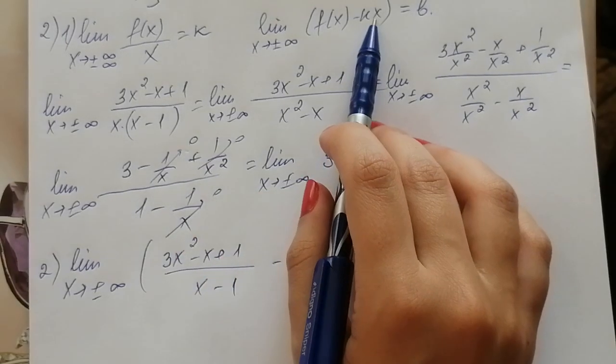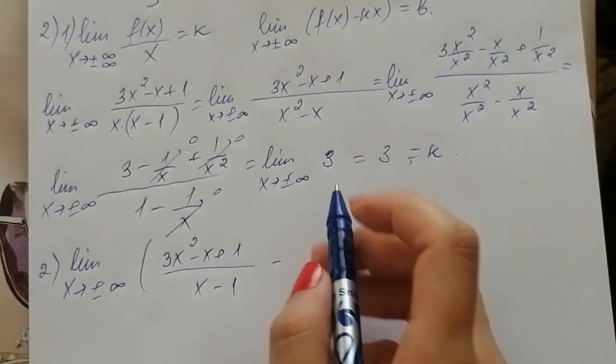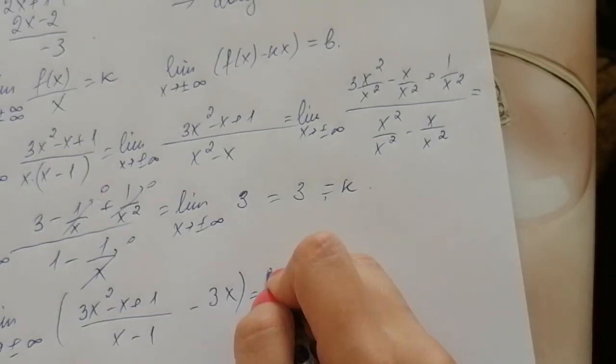Minus k times x, k is 3. Let's solve it.